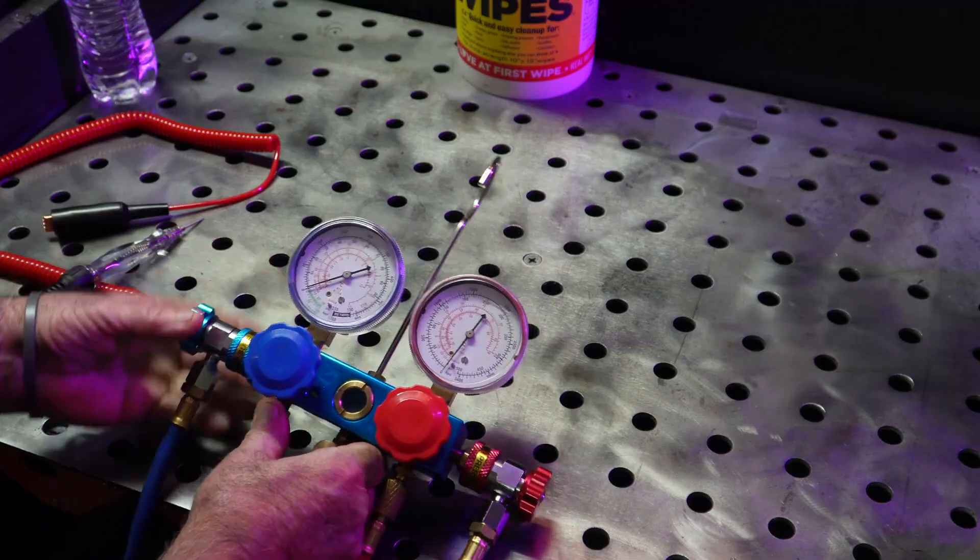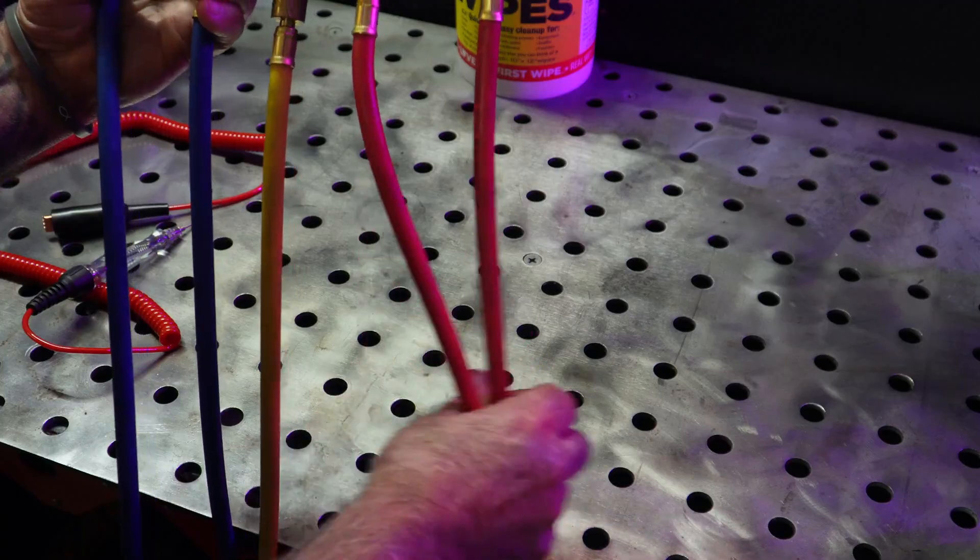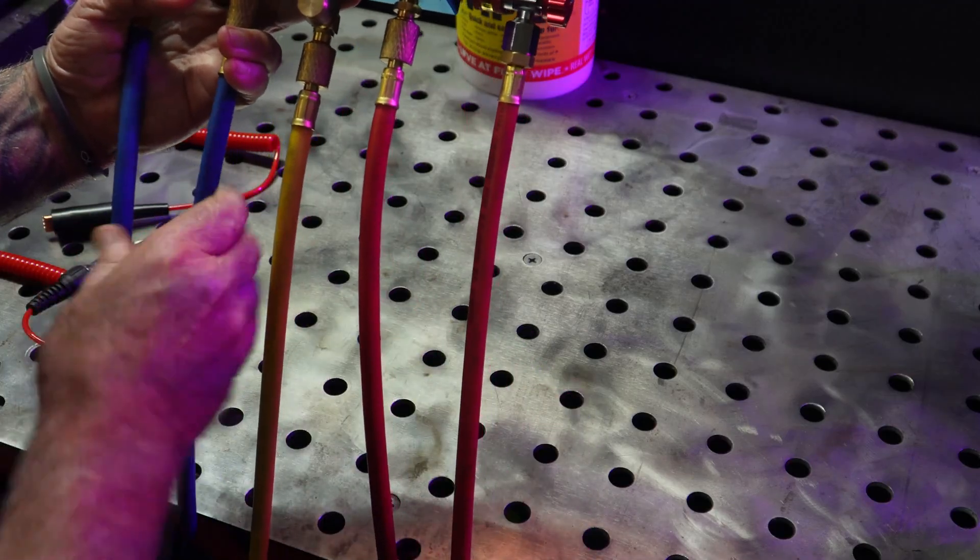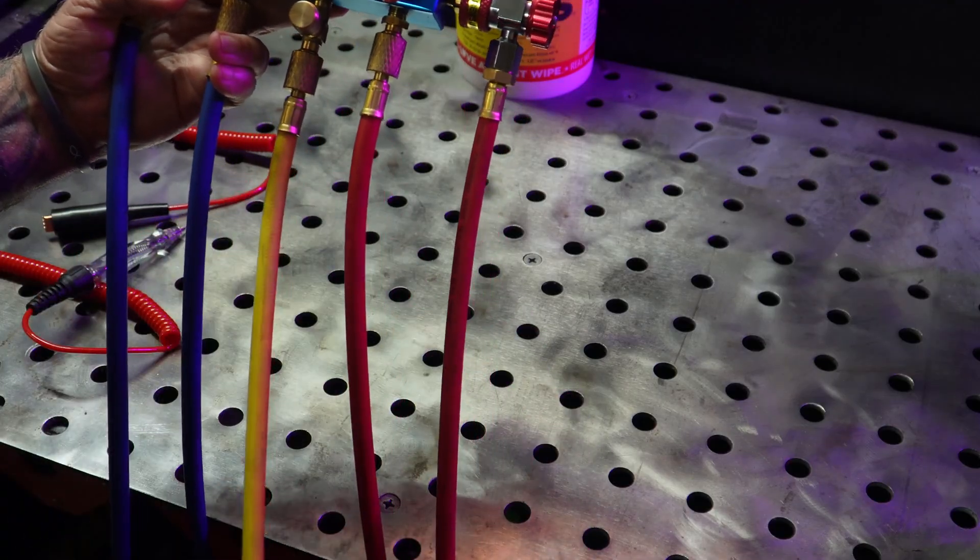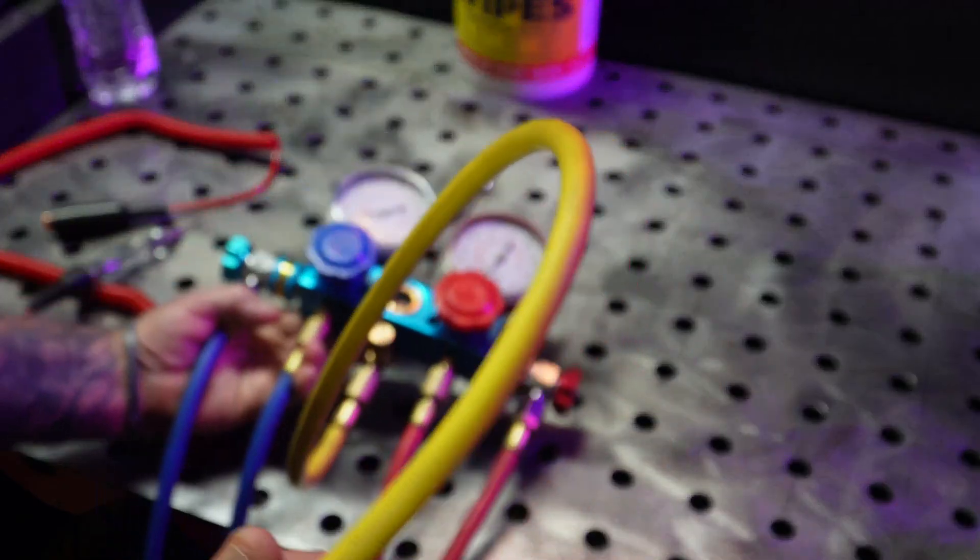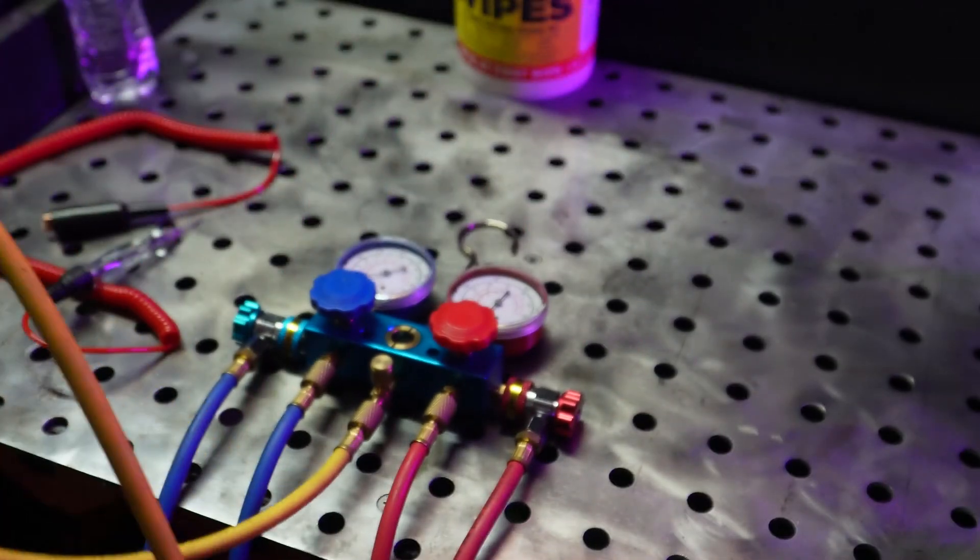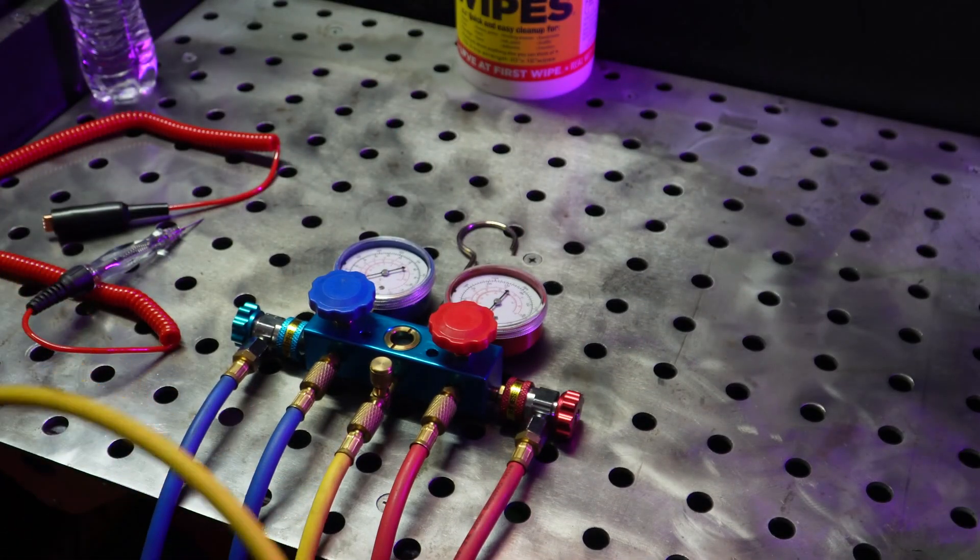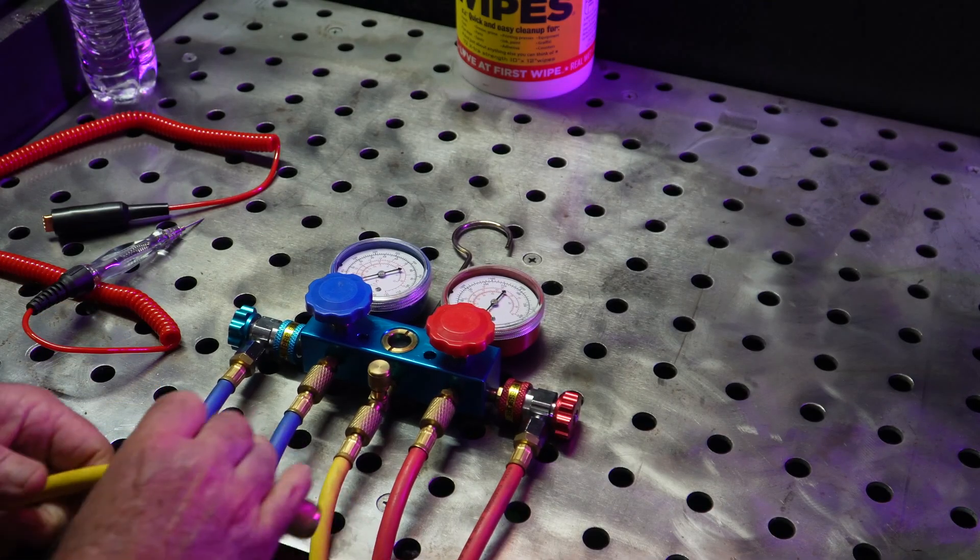You can tell by the different colors of the hoses: low, high. Now this center hose is actually your charging hose, or it's also the hose that you would recover refrigerant or pull a vacuum on.